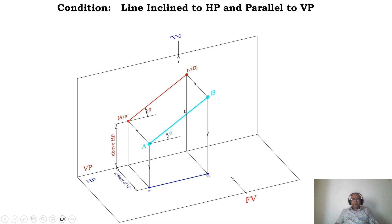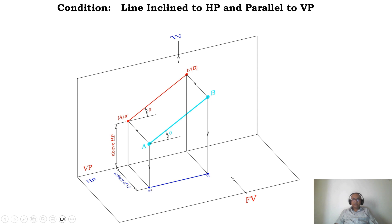If the line is parallel to VP, I have to look from the top view. If the line is inclined to HP, I should look from the front view. If you look from the front view, the image falls on the vertical plane; if you look from the top view, the image falls on the horizontal plane. When looking from the front view, I cannot see the image in the horizontal plane because both the horizontal plane and the view direction are parallel to each other. Similarly, to see the image in the horizontal plane, I should look from the top view.